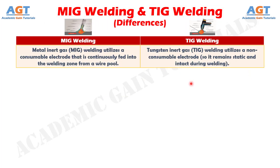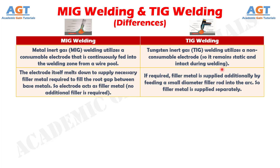Difference number 1: Metal inert gas, or MIG welding, utilizes a consumable electrode that is continuously fed into the welding zone from a wire pool, whereas tungsten inert gas, or TIG welding, utilizes a non-consumable electrode, so it remains static and intact during welding.